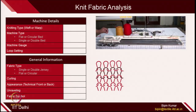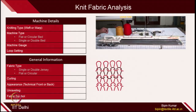The first thing when you are doing the analysis, you should know the machine details — like on which machine the fabric is being formed, what are the types of machines, and what is the gauge of the machine. Machine gauge is the number of needles being used per unit inch on the machine. Also, what loop settings have been used to produce the fabrics.